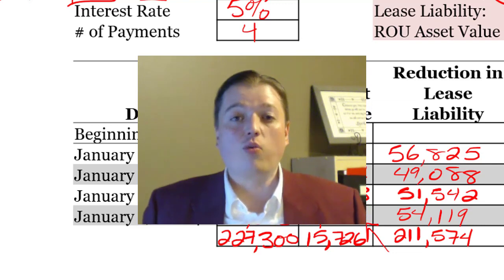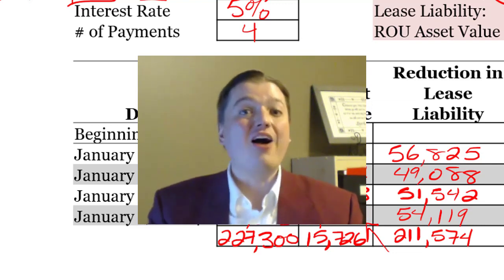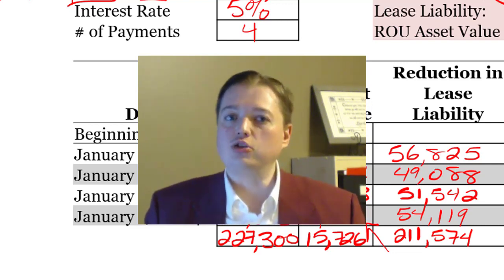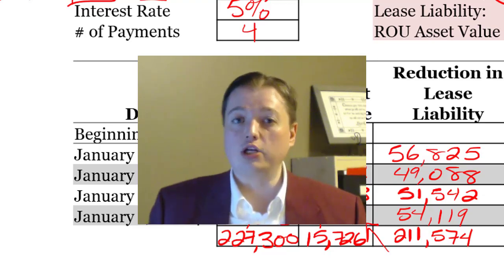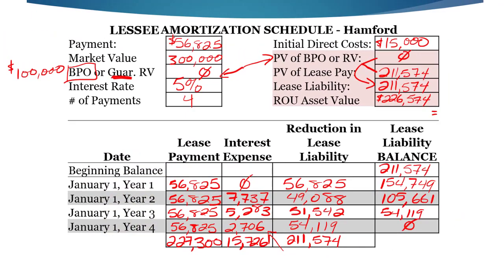What we didn't have time for were the journal entries. First thing we're going to do is jump into journal entries. Hopefully you're comfortable with the amortization table, because we're going to take those numbers and jump right into the journal entries — doing them side by side, the finance option and the operating option, so we can see the differences in the lessee's two methods.